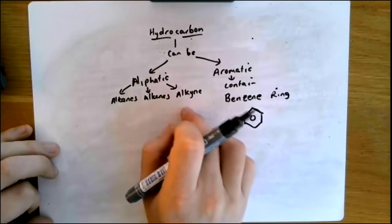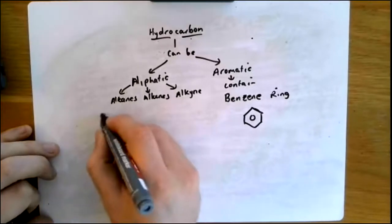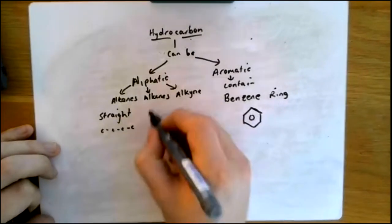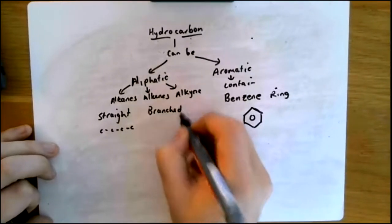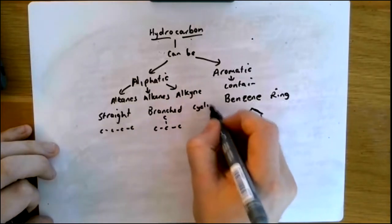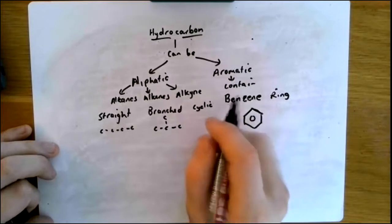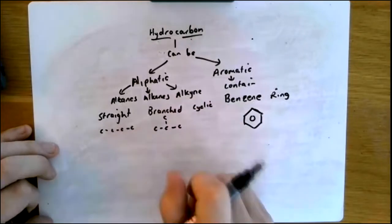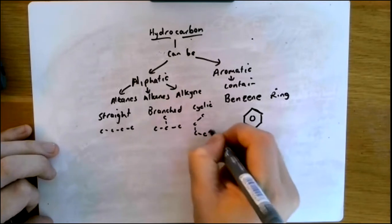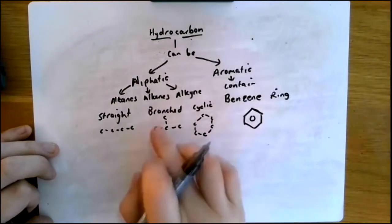There are shapes that these can be. What main shapes do aliphatic hydrocarbons have? I'm hoping that you said straight — one carbon after the other in a straight line — branched, so maybe three in a line but one out to the side, or cyclic, which means in a ring, like a cycle. Cyclic means carbons in a ring, but not benzene — not with the ring in the middle.